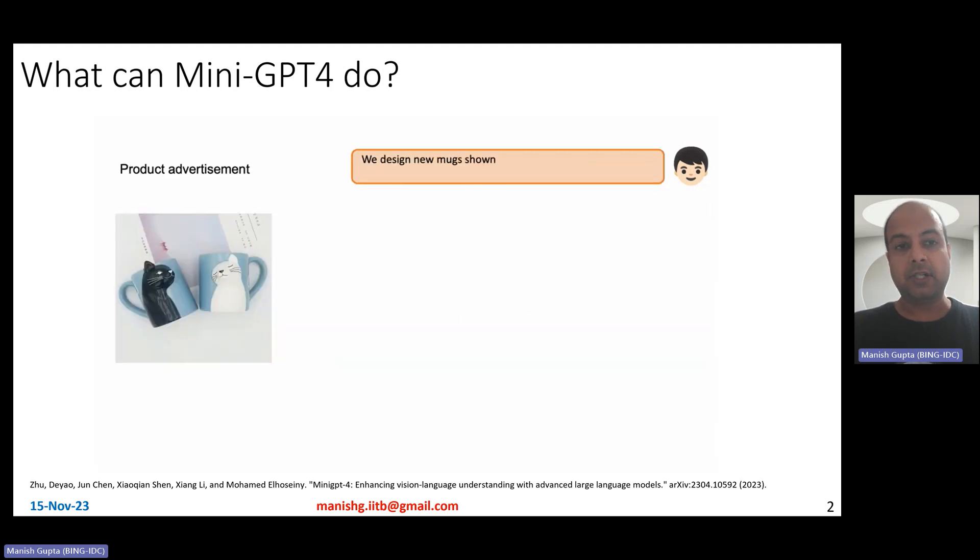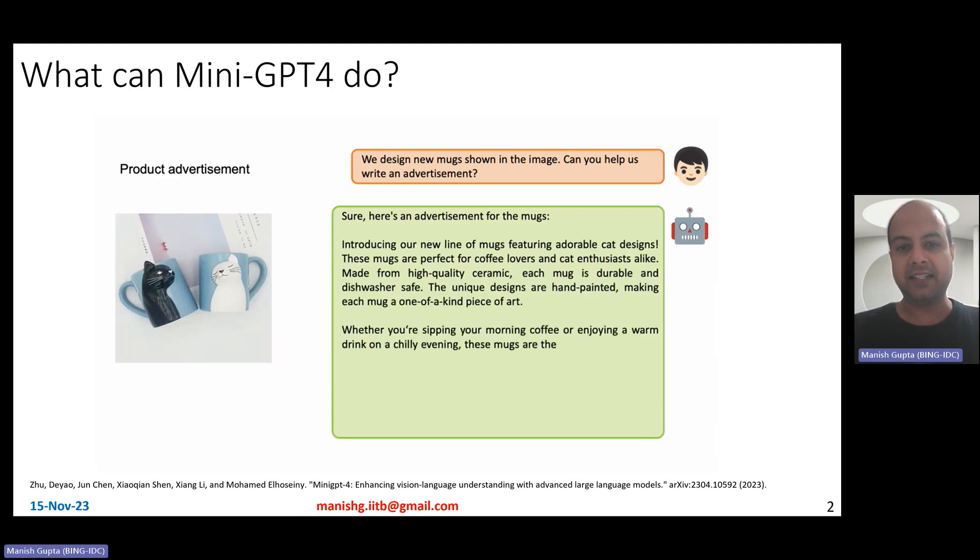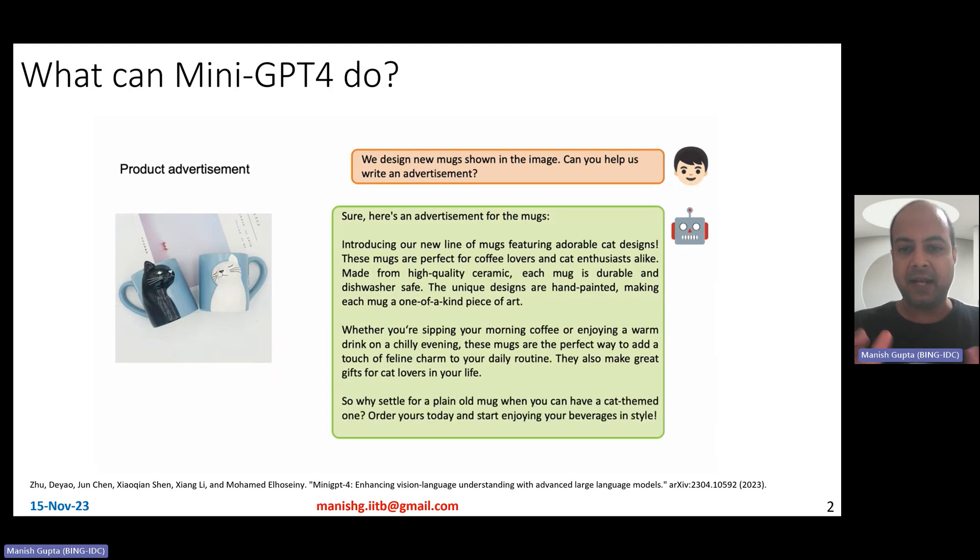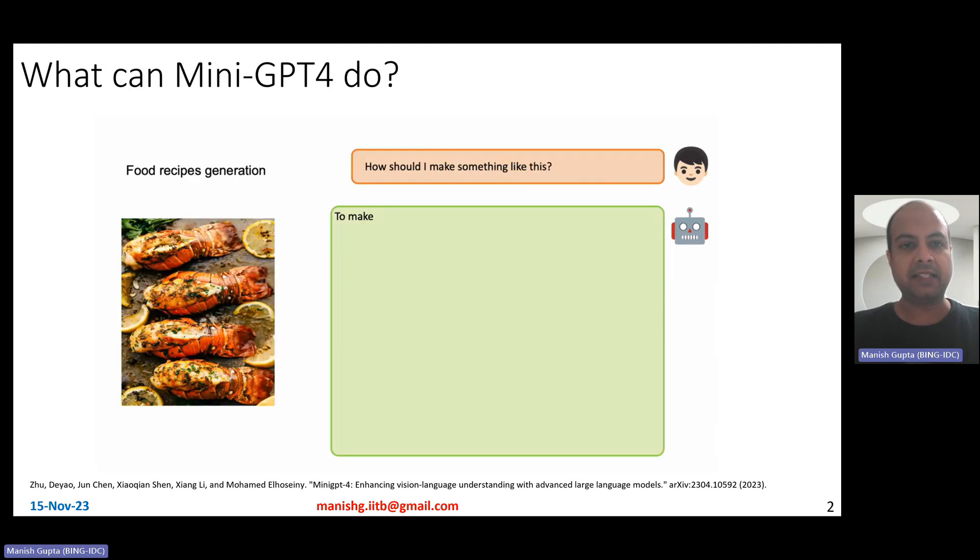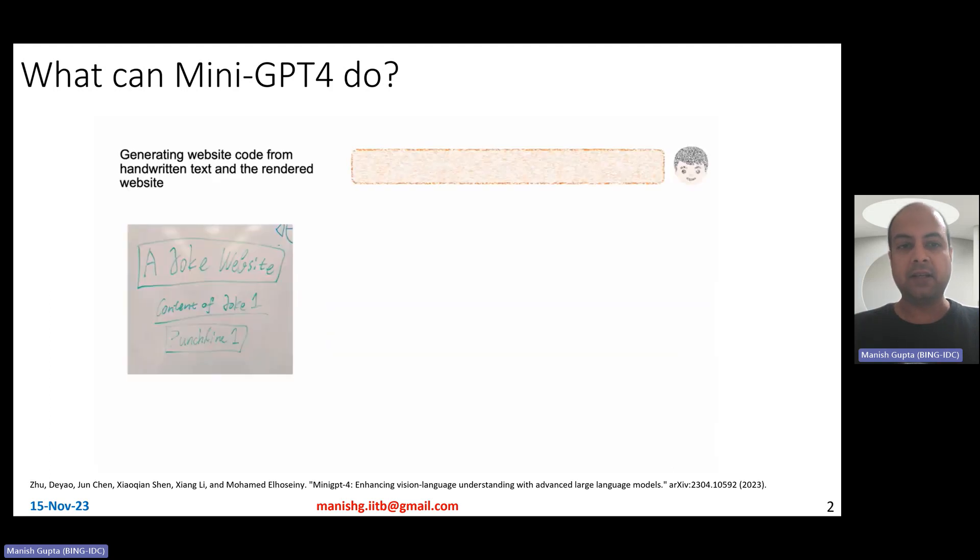It can also do other kinds of things like design product ads. Given these new mugs, design a product ad, it can nicely say that, hey, these mugs are perfect for coffee lovers and cat enthusiasts, coming up with a really nice ad. It can take images of food items and then come up with food recipe generation. It nicely tells you how much of everything you will need and what are the steps to follow to make something like that.